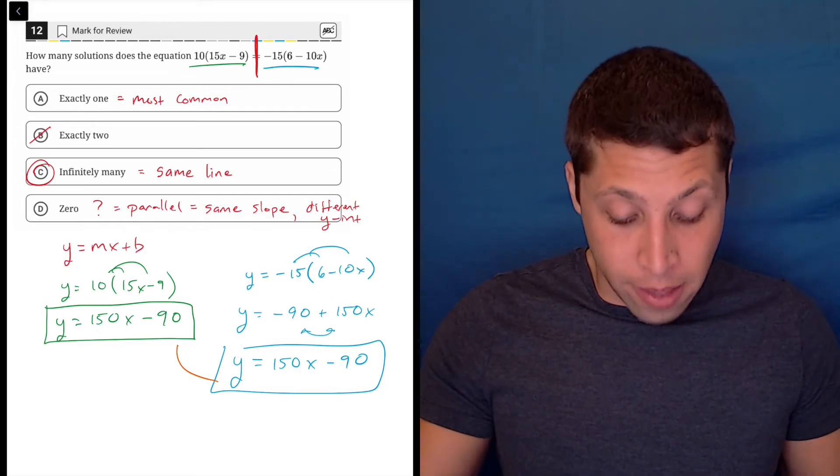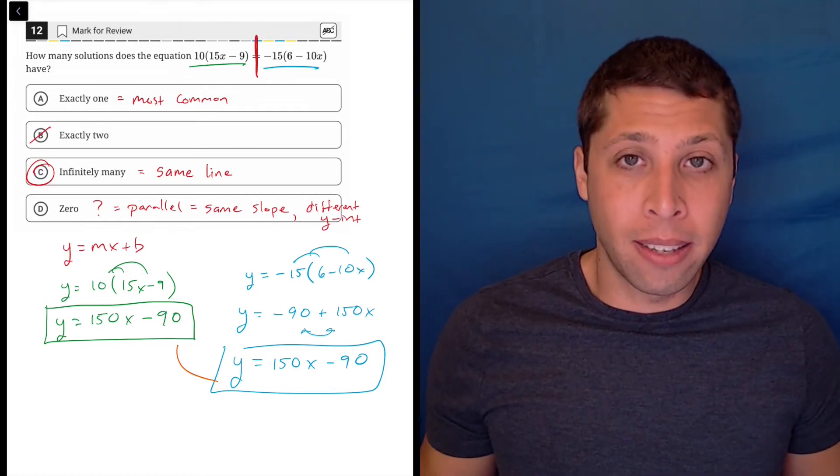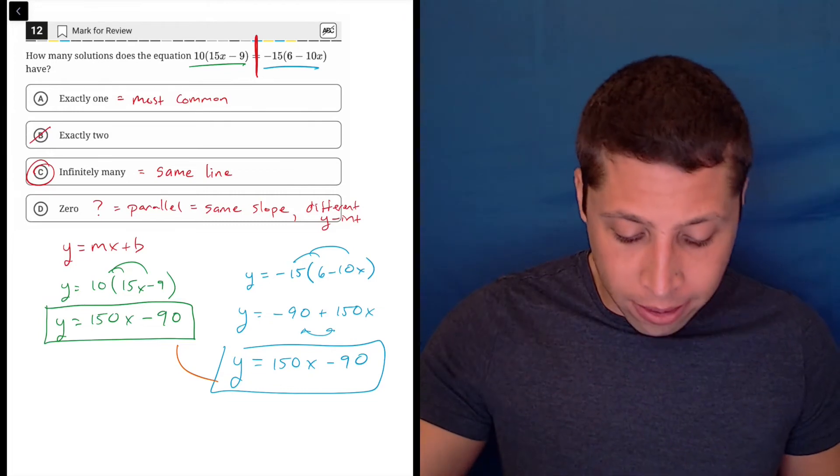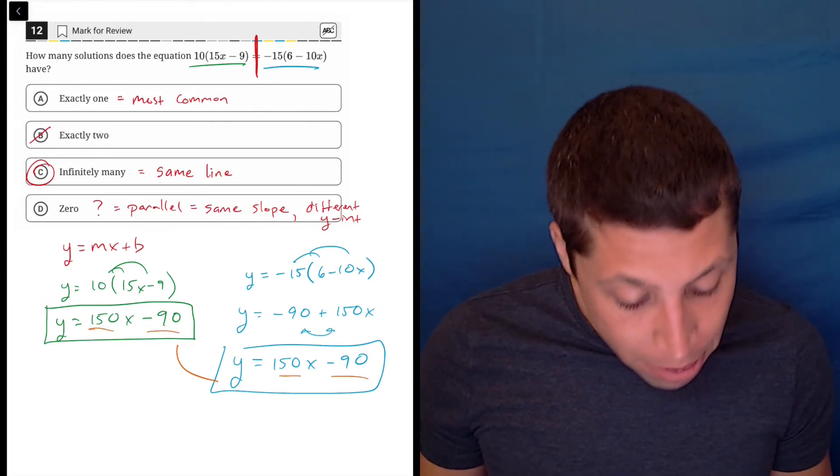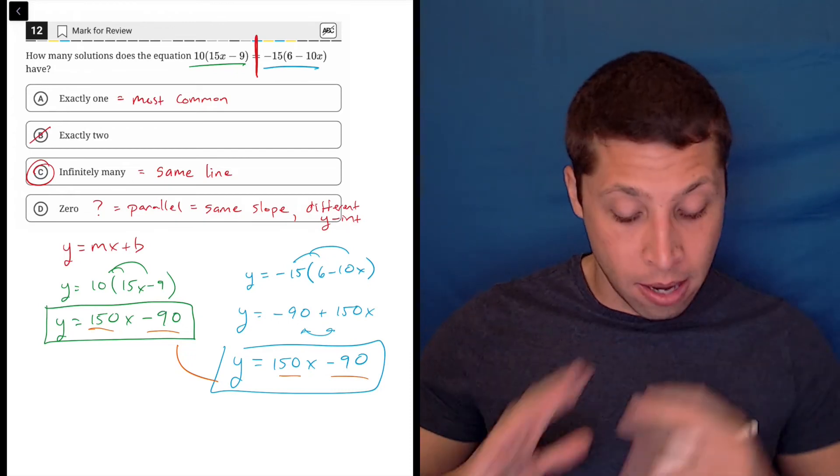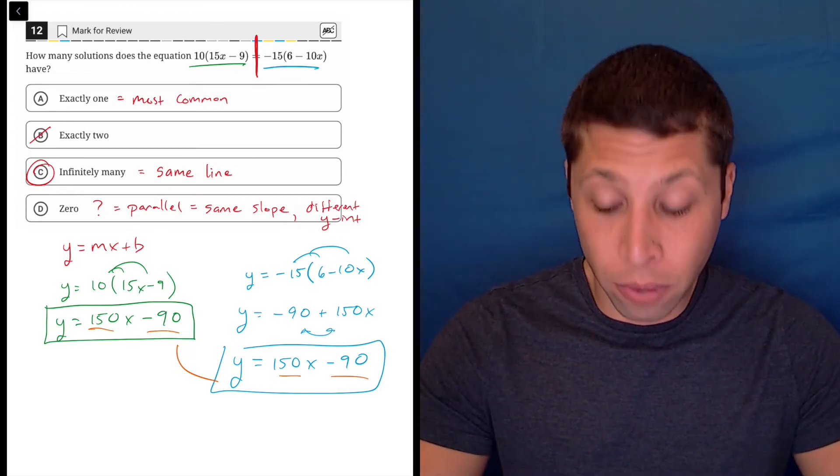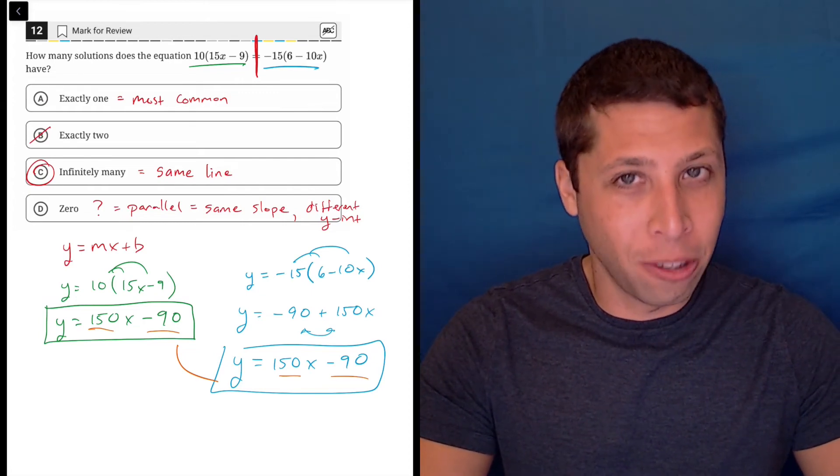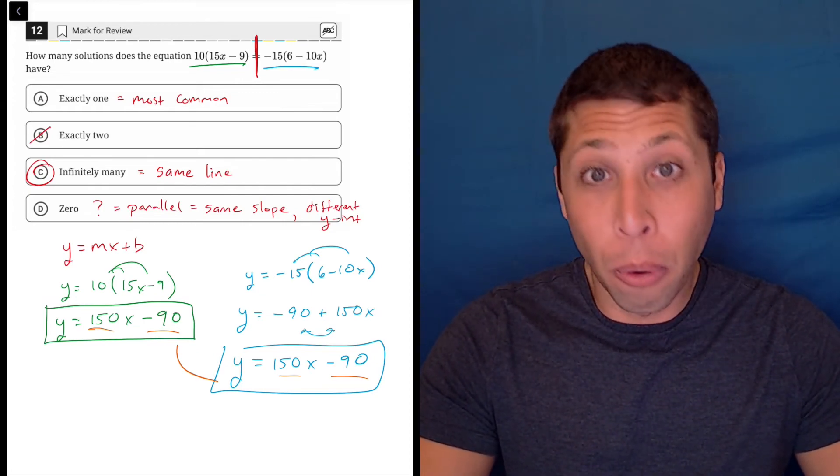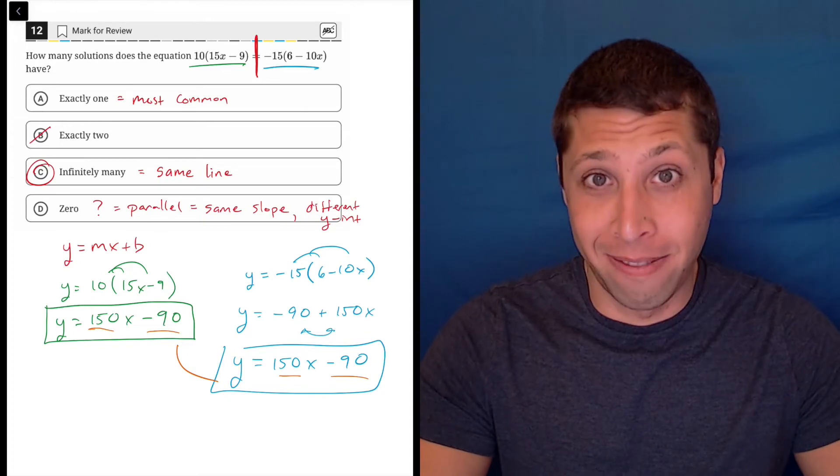So there's my proof that I have infinitely many solutions. These are exactly the same line. The m's are the same, the 150 is the slope. The b's are the same, negative 90. So we now have proof that these equations would have infinitely many solutions, meaning they intersect at every single point because they are the same thing.